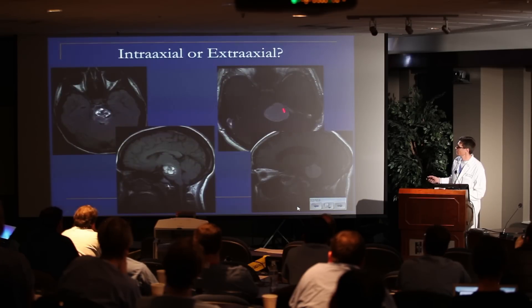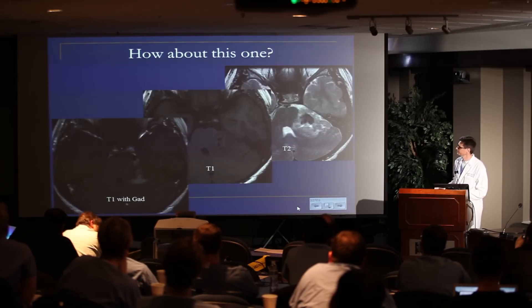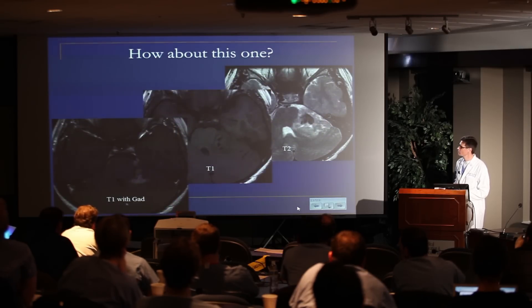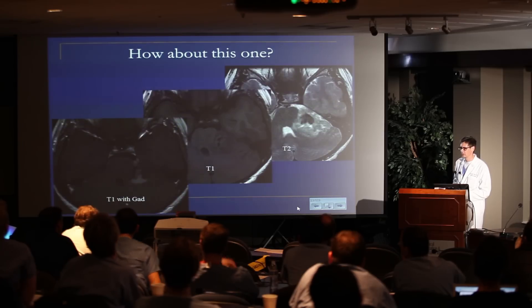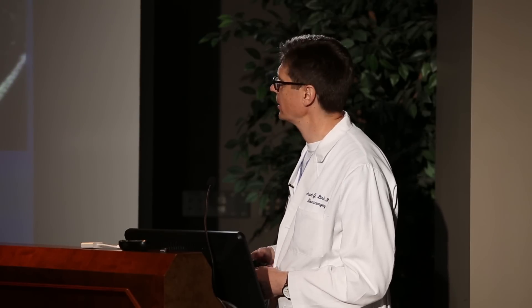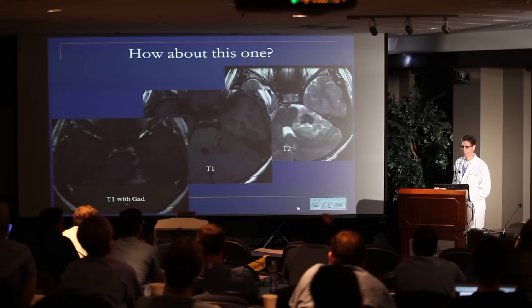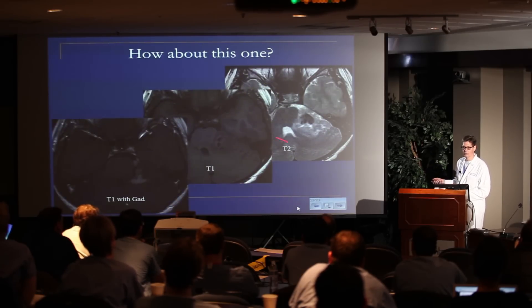This is an intra-axial lesion, this is a completely extra-axial lesion. That one — intra-axial exophytic — turned out to be a gangliocytoma coming out of the brainstem in a 12-year-old child.